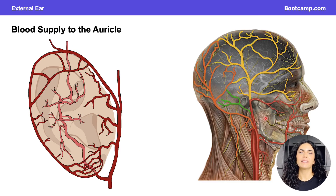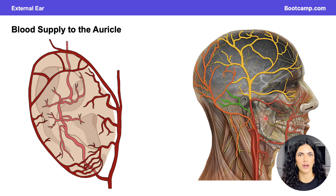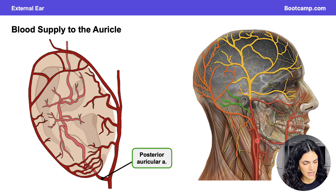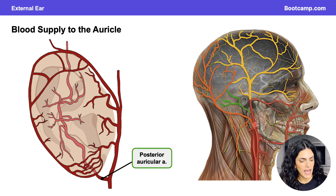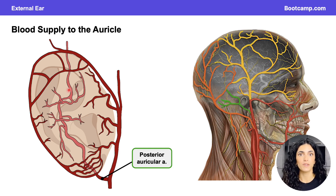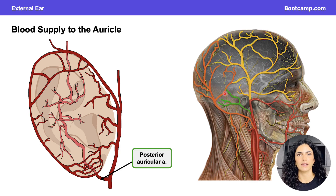Next, let's talk about the blood supply to the auricle. All vessels supplying the auricle are direct branches of the external carotid artery. The first branch is the posterior auricular artery, outlined in green here. As the name implies, this artery travels posteriorly along the auricle, supplying the posterior aspects of the auricle and also giving off branches to supply part of the scalp along the ear.